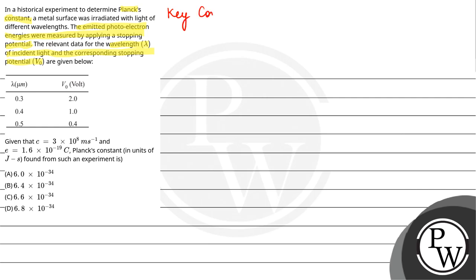So Bajo, here our key concept is in case of photoelectric emission, the relation between stopping potential and wavelength is: eV₀ equals hc/λ minus φ₀.